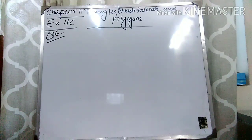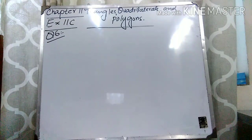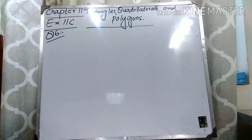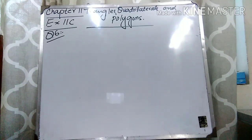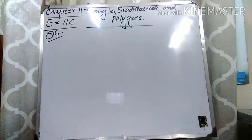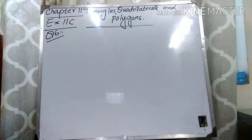Question number 6 is: find the number of sides of a regular polygon, where each interior angle of the polygon is given. Students, remember that as interior angles are given, we can find out the number of sides if we know each exterior angle, because we can find the number of sides of a regular polygon by dividing the sum of exterior angles by each exterior angle. So first you find each exterior angle, then divide 360 by it.